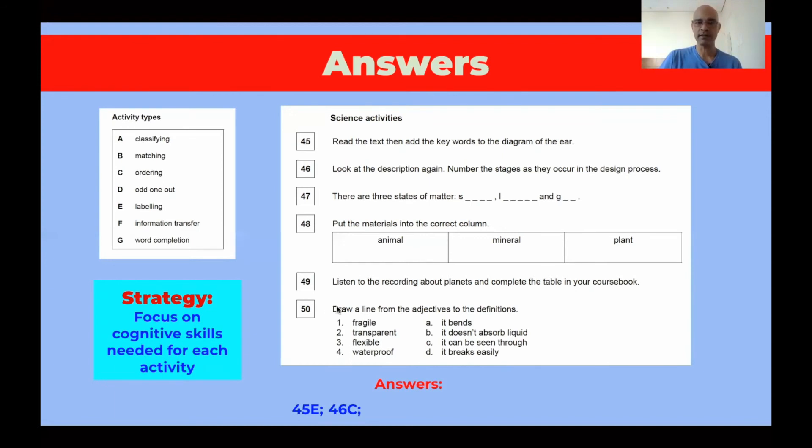Number 47, there are three stages of matter. Again, stages, but it's not asking them to order them. It's already telling them that there are three stages. And then S blank blank blank. L blank blank blank. And G blank blank blank. So students are going to be supplying the rest of the word. They're going to be completing the word. Word completion, letter G.